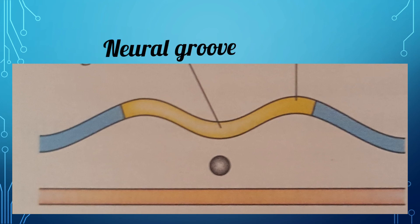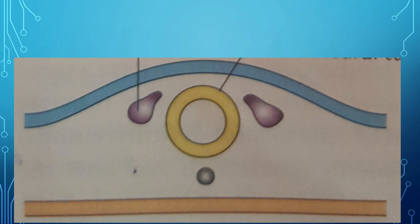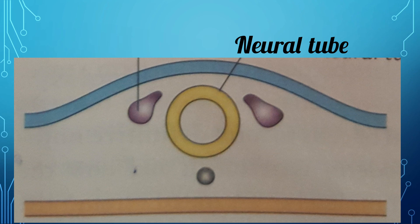The neural groove becomes deeper and the neural folds move towards the midline to fuse with each other to form a cylindrical neural tube. The extension of the neural tube is the same as the extension of the notochord, that is from Hensen's node to the prochordal plate.